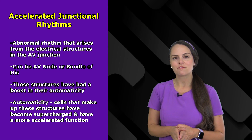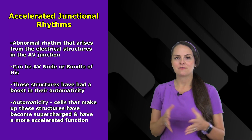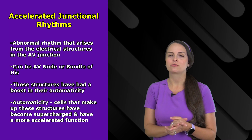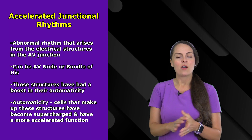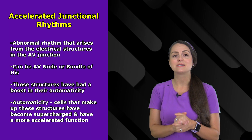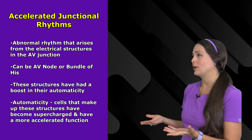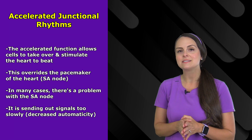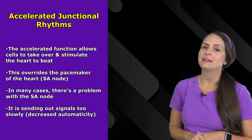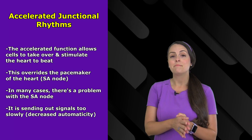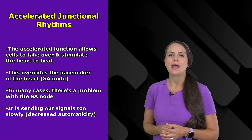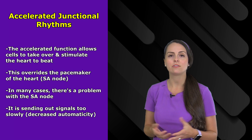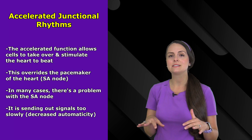This is an abnormal rhythm that arises from electrical structures in the AV junction — mainly the AV node, but it could also be the bundle of His. What's happened is that these electrical structures have had a boost in their automaticity, meaning the cells that make up these structures have become supercharged, more than normal. Therefore they have a more accelerated function, and because of this they can take over and stimulate the heart to beat, overriding the main pacemaker — the SA node, the sinoatrial node. In most cases of accelerated junctional rhythm, the reason it's presenting is because the SA node is sending out electrical signals way too slowly, so it has a decrease in its automaticity.